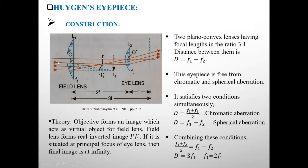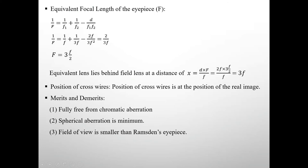See here, these are rays from objective. Here image I1, and this image acts as virtual object for this field lens. Here we get image at I1', and this image also acts as object for this eye lens. If this image is at principal focus of eye lens, then final image will be at infinity.